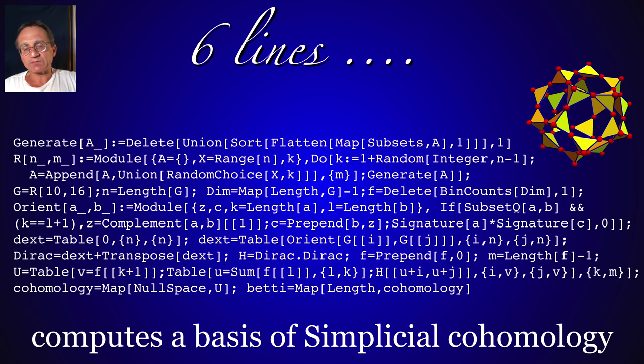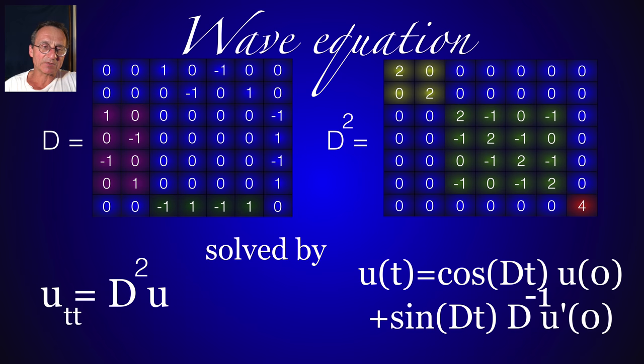I have only the code here for the cohomology, simplicial cohomology, six lines. Take a simplicial complex, feed it into Mathematica, and you get out the basis of the cohomology. The quadratic cohomology is a little bit, about twice as long. And you can do physics, you can do the wave equation, you can do non-linear wave equations.